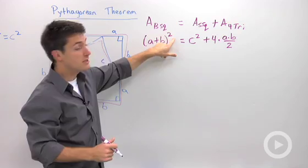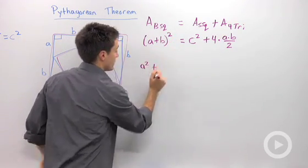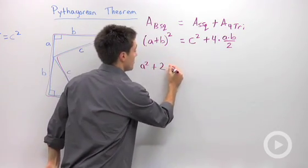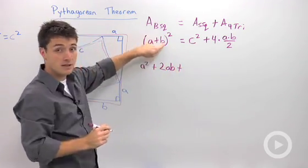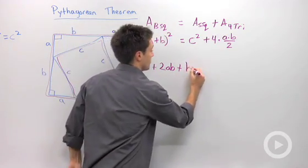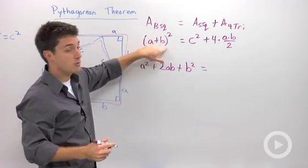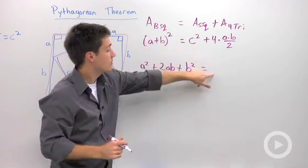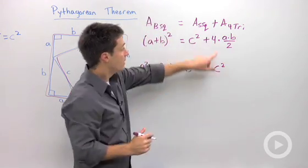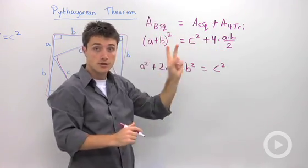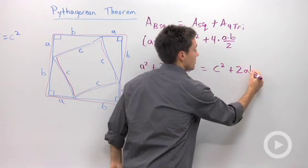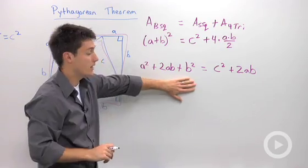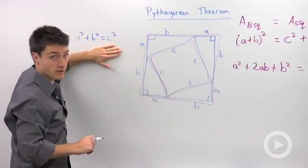Let's go back to algebra. If I square the binomial (a plus b), I get a squared, plus 2 times a times b — that's 2ab — plus b squared. So expanding (a+b)² gives us a squared plus 2ab plus b squared. Bringing down the right side: c squared, and 4 divided by 2 is 2, so we have plus 2ab.